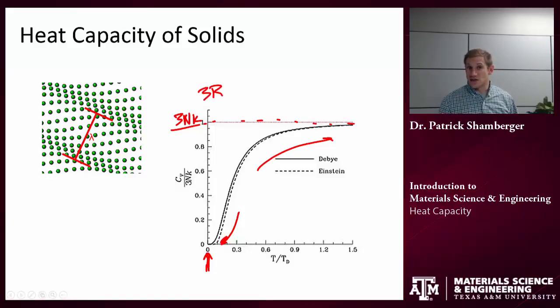R is the ideal gas constant, K is Boltzmann's constant, and N is Avogadro's number. The heat capacity is ultimately a function of how many atoms are there in the material. And this is why different materials are going to have different heat capacities. Because usually, we think of a kilogram of a material.